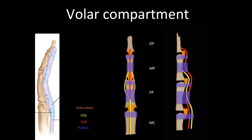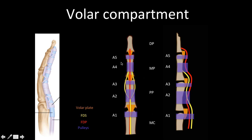The last volar structure is the pulleys. There are cruciate and annular pulleys — the cruciate ones are not clinically important so we focus on the five annular pulleys. The odd-numbered pulleys (A1, A3, A5) are close to the joints — MCP, proximal interphalangeal, and distal interphalangeal joints. The even-numbered pulleys (A2, A4) are along the shafts — A2 along the proximal phalanx and A4 along the middle phalanx. The function of the pulleys is to keep the flexor tendons in close proximity to the underlying bone, particularly during finger flexion.